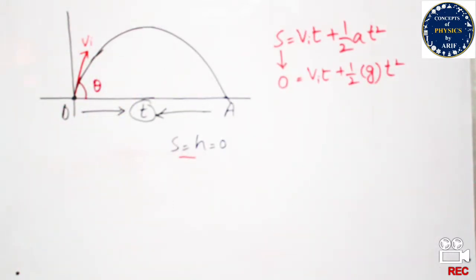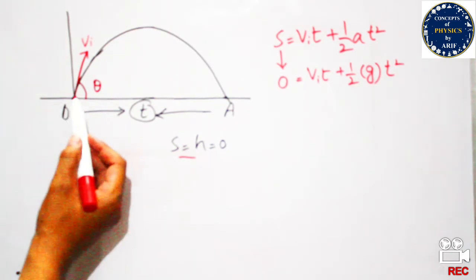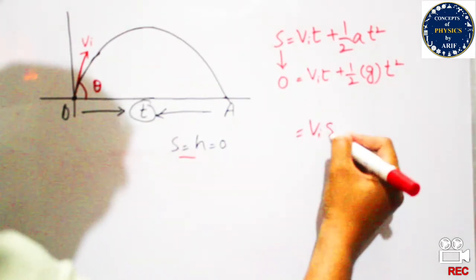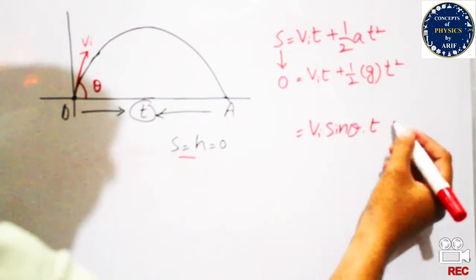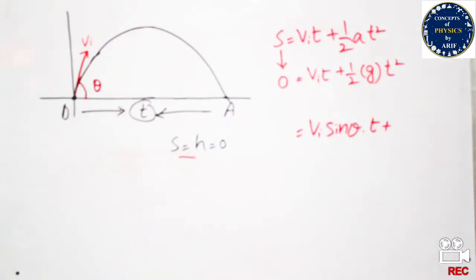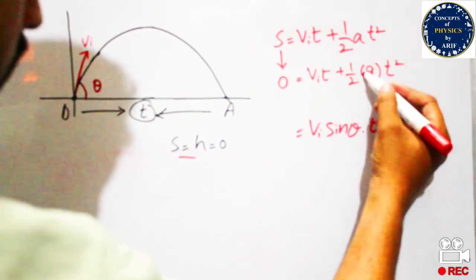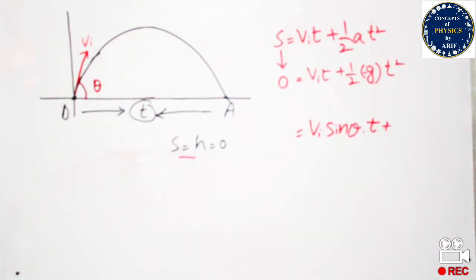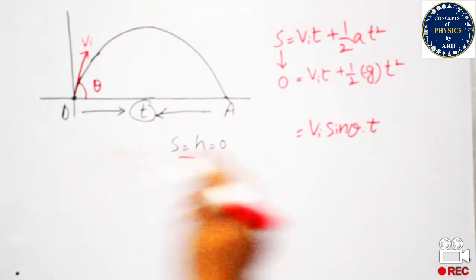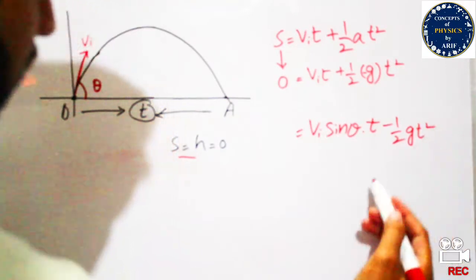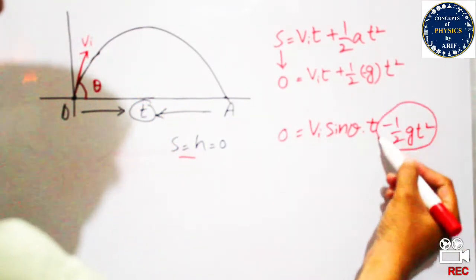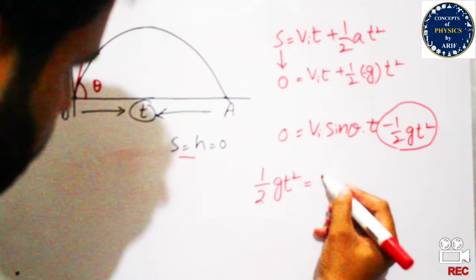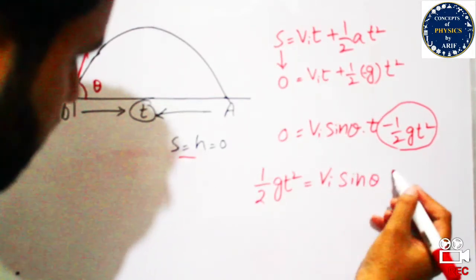Since this body is moving along the vertical direction, its initial velocity will be Vi sine theta. So: 0 = Vi sinθ · t + ½g·t². The acceleration due to gravity acts in the opposite direction, so it becomes negative: 0 = Vi sinθ · t minus ½g·t². Rearranging, we get ½g·t² = Vi sinθ · t.